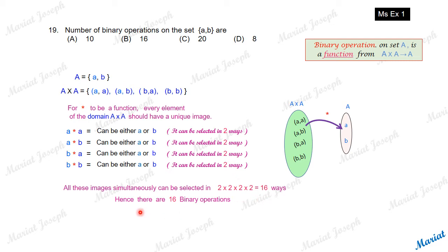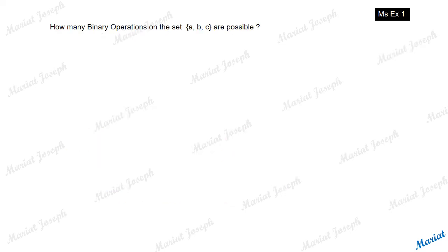Hence, there are 16 binary operations possible from set A cross A to A. Now let's see — what if there are three elements in the set?